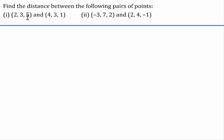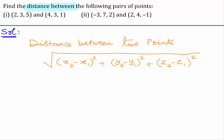In this problem, we are given two pairs of points and we have to find out the distance between them. The formula to find out the distance between two points is given by the square root of (x2 minus x1) whole square plus (y2 minus y1) whole square plus (z2 minus z1) whole square.